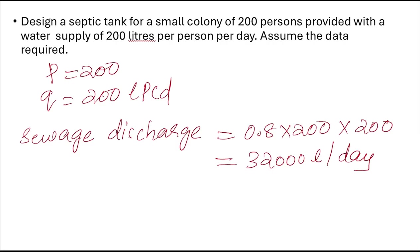If the rate of sewage is given directly, multiply it with the population. If the rate of water supply is given, first calculate the sewage as 70 to 80 percent of the water supply rate, then multiply by population. So remember: here I multiplied by 0.8 because the rate of water supply was given. We have now obtained the sewage discharge.